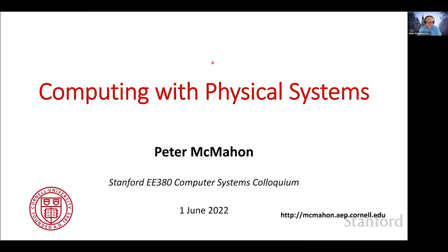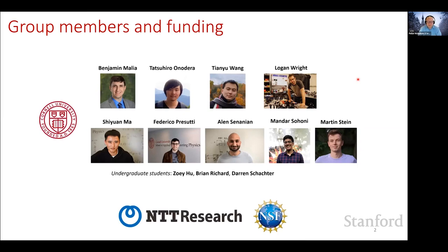I'm going to talk about computing with physical systems — specifically, how we can harness physical systems that have complex dynamics and use the intrinsic computing those systems naturally do to do useful things for us. In particular, we're going to try to train them to act as neural networks. The actual work is done by the members of my group, and funding primarily comes from NTT and the NSF.